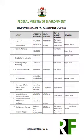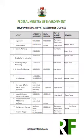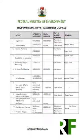A revenue to government charge is one you pay that goes directly to government coffers — it is not used for any operations during the EIA exercise. The operational charges are used to maybe assess your site, accompany consultants to take samples, do baseline environmental studies for the wet and dry season, depending on the category of the project.